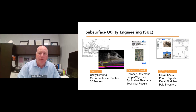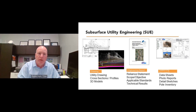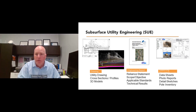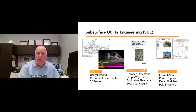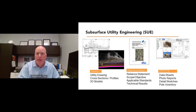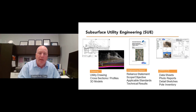A SUE investigation will typically include the following deliverables. The utility drawing has utility alignments with quality levels assigned to segments, notes, and other data. It's typically a plan view or 2D, but it can include cross-sections and profiles. More recently, in the last five years or so, we've really moved into more 3D modeling and renderings that include underground structures. These typically include a lot of assumptions, so it's important to understand those assumptions when using 3D data sets.